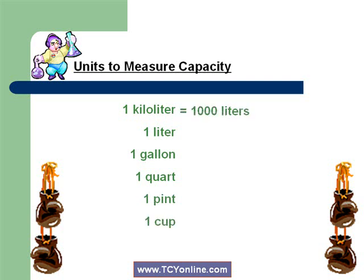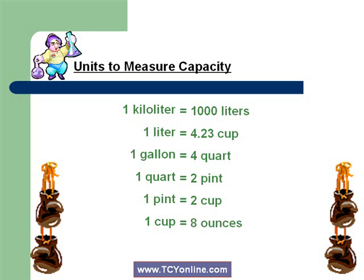We are aware that 1 kiloliter equals 1000 liters, while 1 liter equals 4.23 cups. 1 gallon equals 4 quarts. 1 quart equals 2 pints. While 1 pint equals 2 cups. And 1 cup equals 8 ounces. Always remember these conversion formulas to solve the problems.